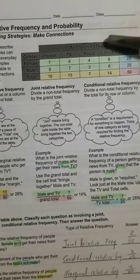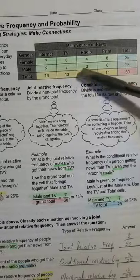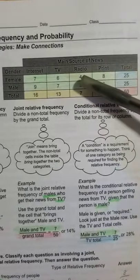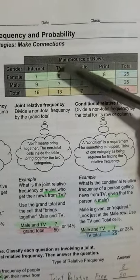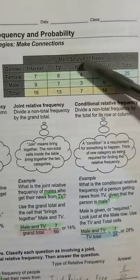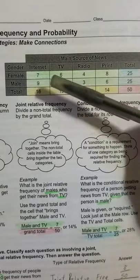We're going to look at this example right here. You're going to have two main categories: main source of news and gender.